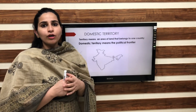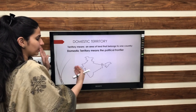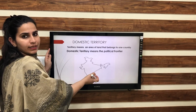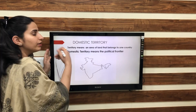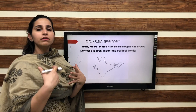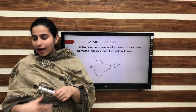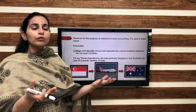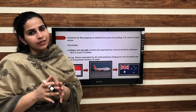The literal meaning of territory means any area of land that belongs to a particular country. As you can see, it's a political map of India. The area of land which is within the political boundaries of India will be considered as its territory where people can perform different activities to earn money. In a layman's language, domestic territory means political frontier — the limitation within which people have rights to perform different activities. But for the purpose of national income accounting, we learn the concept of domestic territory in a wider sense. We include various things which are not within the geographical boundaries of India, but will still be considered as domestic territory.